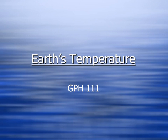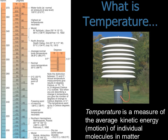Welcome back — this is lecture four on the temperature of Earth. Temperature is the measure of the average kinetic energy of individual molecules in matter. Basically, it's the speed at which molecules are bouncing around and hitting each other. The more kinetic energy, the faster they're moving and the warmer the air; the slower they're moving, the cooler the air.